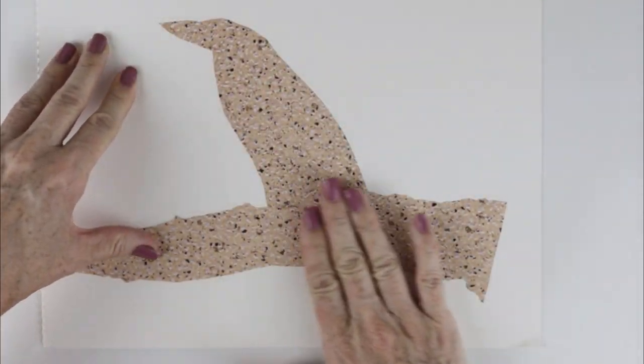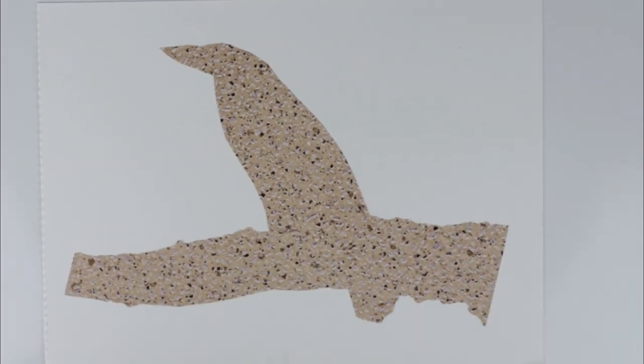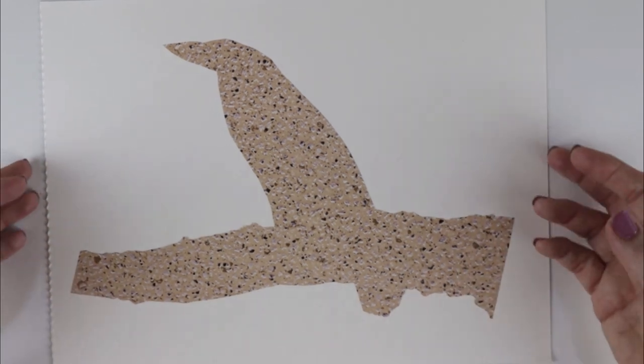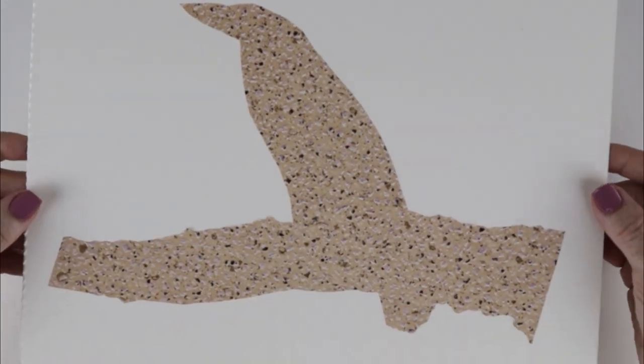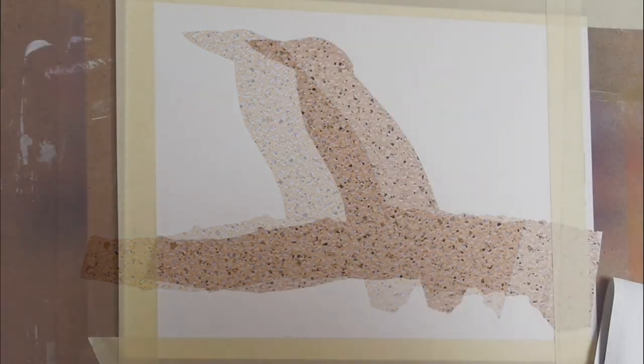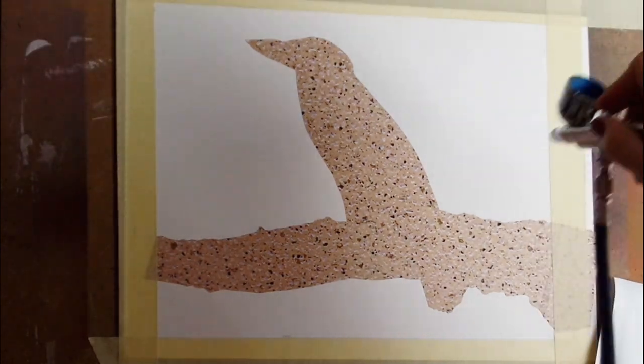I want to draw on the bird with colored pencils so I'm adhering the mask to Strathmore Bristol Smooth drawing paper. As you can see it's really very easy to apply. This was partly a test to see if I could paint over it and also draw on it once it was removed.